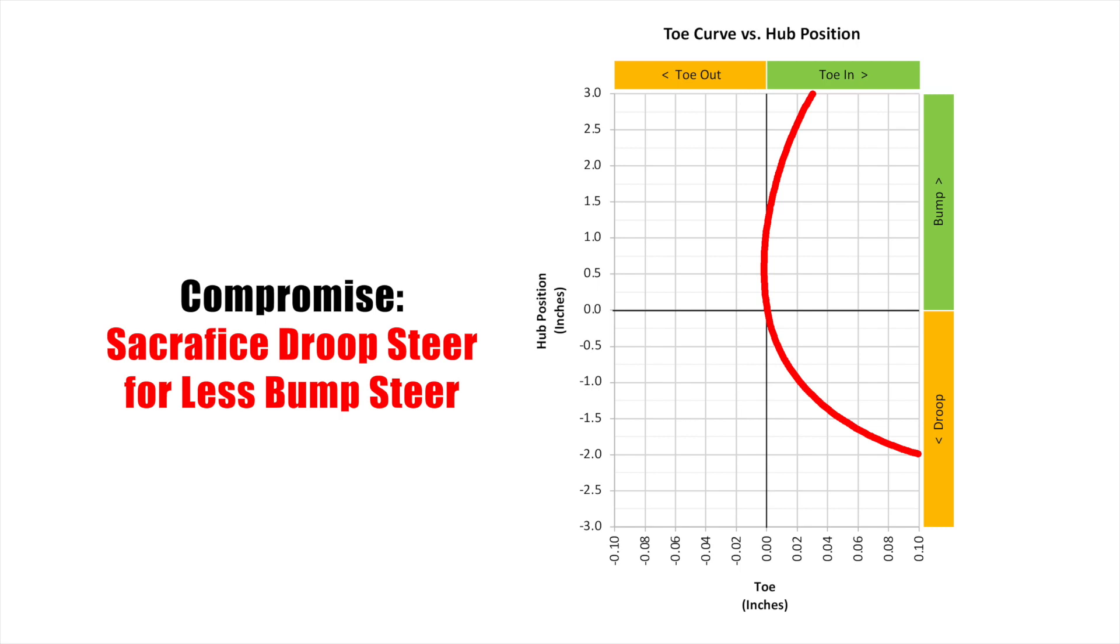Here's an example. See how the first part of the bump travel is pretty minimal? It's in droop where it goes far, but that's less important in corners because a wheel that's in droop doesn't have a lot of load on it, so it really doesn't matter that much.